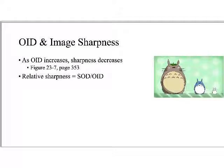Let's talk about OID and image sharpness, because it's not all good in the world of OID. We said it can improve subject contrast, but it also affects image sharpness. As OID increases, sharpness goes down — we start to get pictures that are not sharp. Sharpness is not something we can actually measure; what we can measure and calculate is unsharpness. When we talk about sharpness, it's better to use the term relative sharpness. As OID increases, sharpness decreases, and relative sharpness can be calculated by SOD over OID.